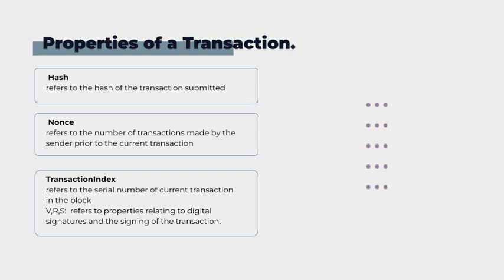Transaction index refers to the serial number of the current transaction in the block. This also includes the cryptographic properties V, R, and S, which relate to digital signatures and the signing of that transaction — which we are going to look at more in-depth in future tutorials.